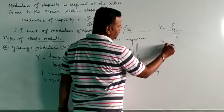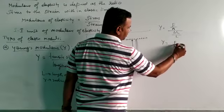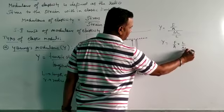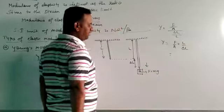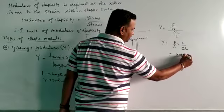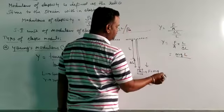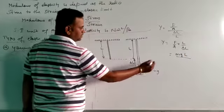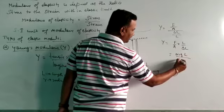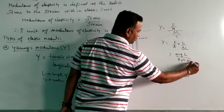Y equals, we can write it as F over A into L over delta L. F is how much? Mg. It is m into g into l, l is the length. Area means the cross-sectional area of this wire, which is pi r squared, into delta L.